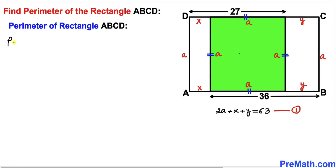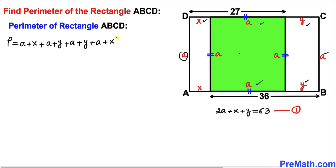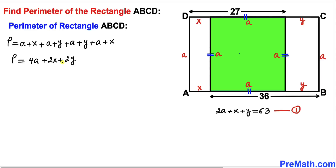So the perimeter of rectangle ABCD is A plus X plus A plus Y plus A plus Y plus A plus X. We add up all these individual lengths and combine like terms: A plus A plus A plus A gives us 4A, plus X plus X gives 2X, plus 2Y.